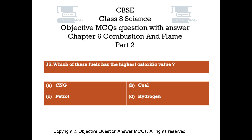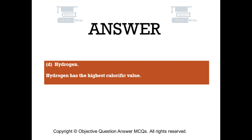Question number 15. Which of these fuels has the highest calorific value? Option A, CNG. Option B, coal. Option C, petrol. Option D, hydrogen. The right answer is Option D. Hydrogen has the highest calorific value.